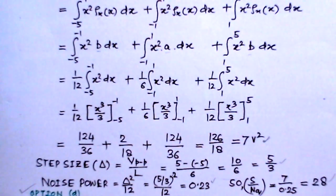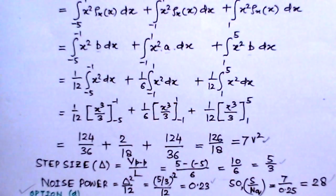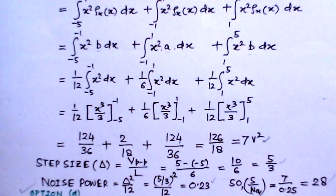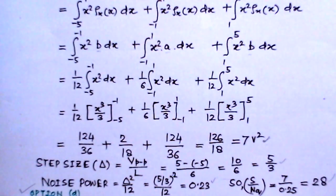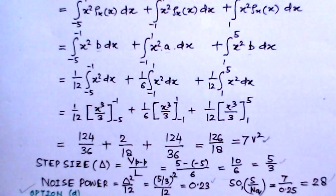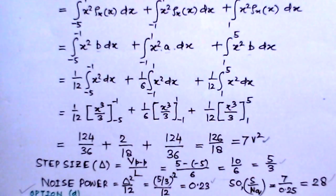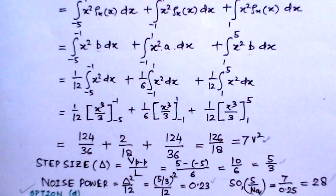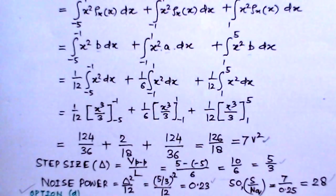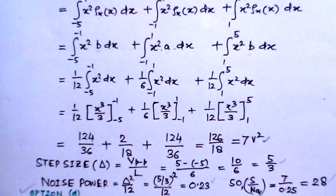This problem is a good variation to problems on pulse modulation. The variation is that so far we have been considering analog signals, but here the signal is random. This shows how a quantizer can be used for pulse code modulation applications with random signals. It is a good problem. Thank you.